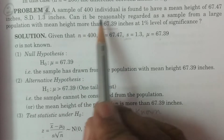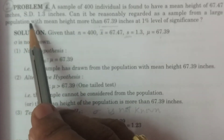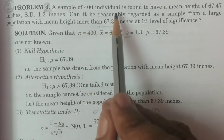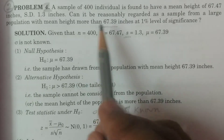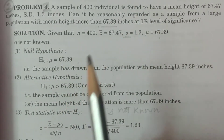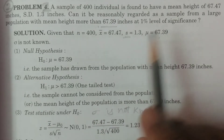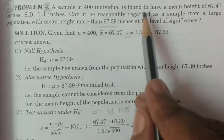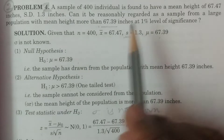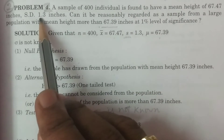A sample of 400 individuals is found to have a mean height of 67.47 inches. The standard deviation is 1.3 inches. This is a single sample, one sample case. So N is equal to 400, X-bar is equal to 67.47, and sample standard deviation S is equal to 1.3 inches.